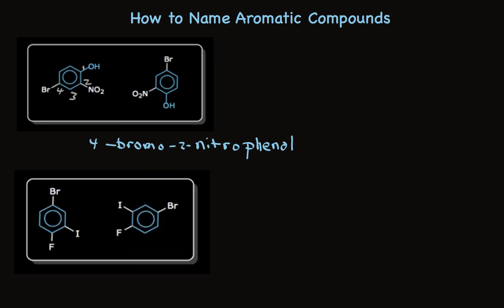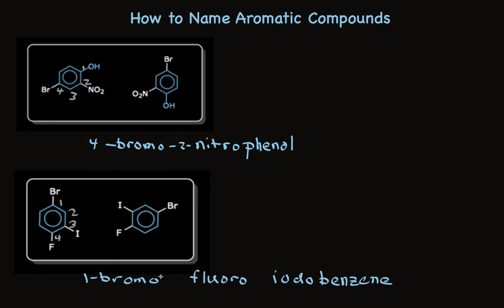One more example: this has no special structure, so it's simply a trisubstituted benzene. Substituents in alphabetical order: bromo, fluoro, iodo. We start with carbon 1 as bromine since it's first, go in the direction that reaches the next substituent quickest, giving 1-bromo-4-fluoro-3-iodobenzene. Notice I've written each structure twice to show that orientation doesn't matter — you get the same name either way. If you apply the rules systematically and use memorized names when you see special structures, naming these with IUPAC names is quite simple, whether you have 3, 4, or more substituents.